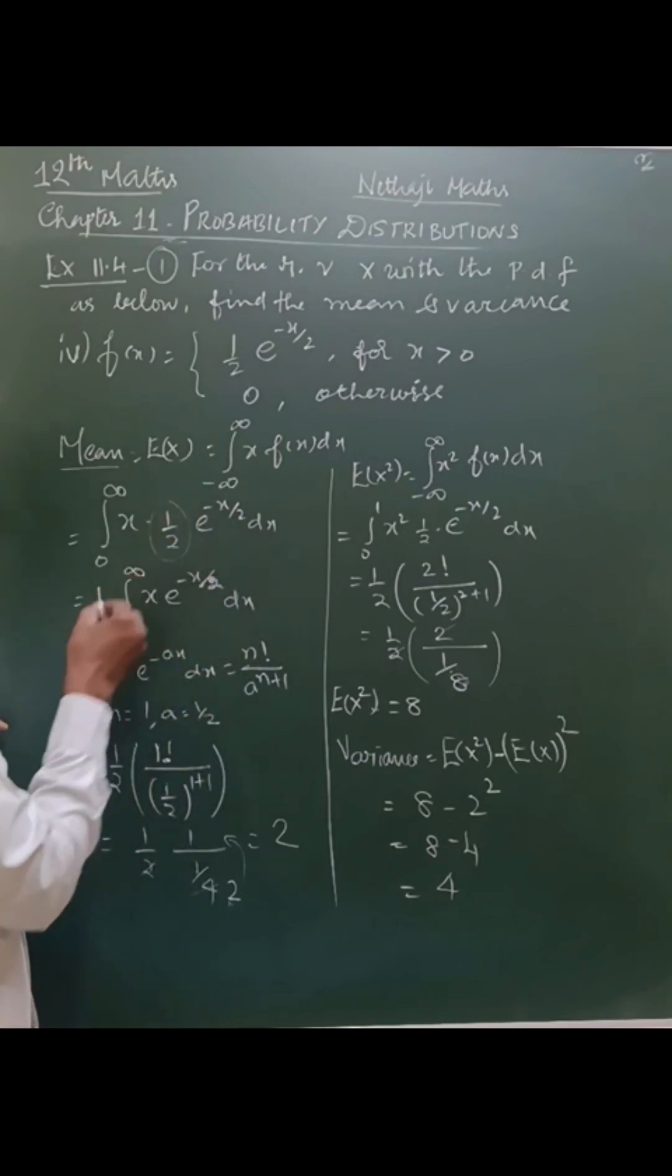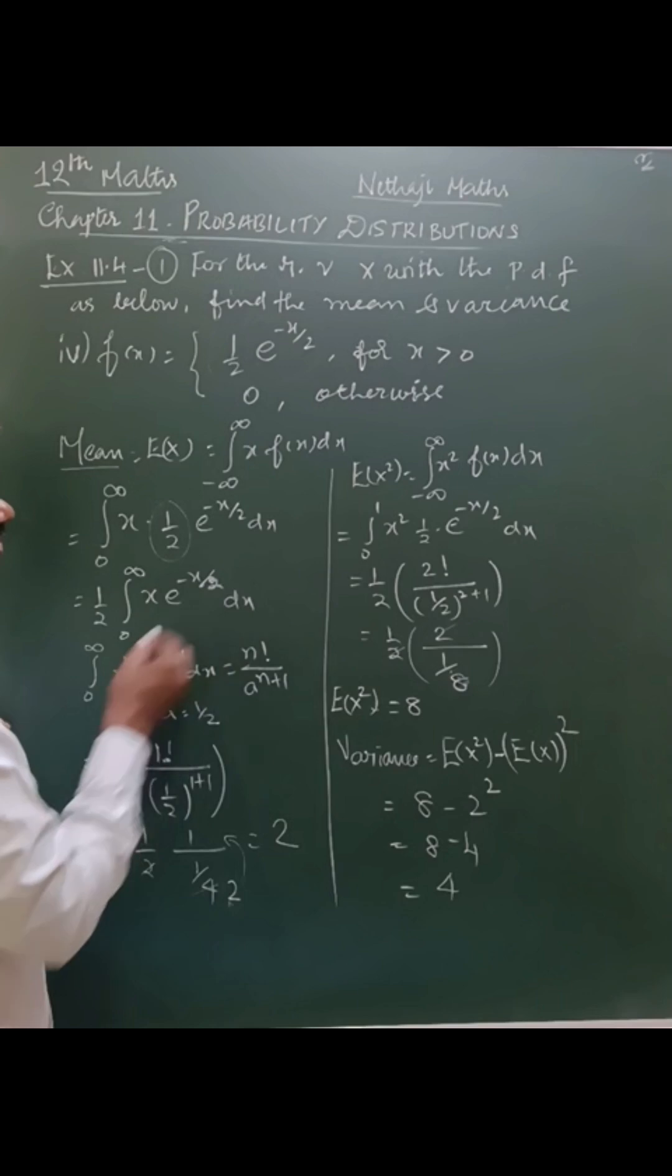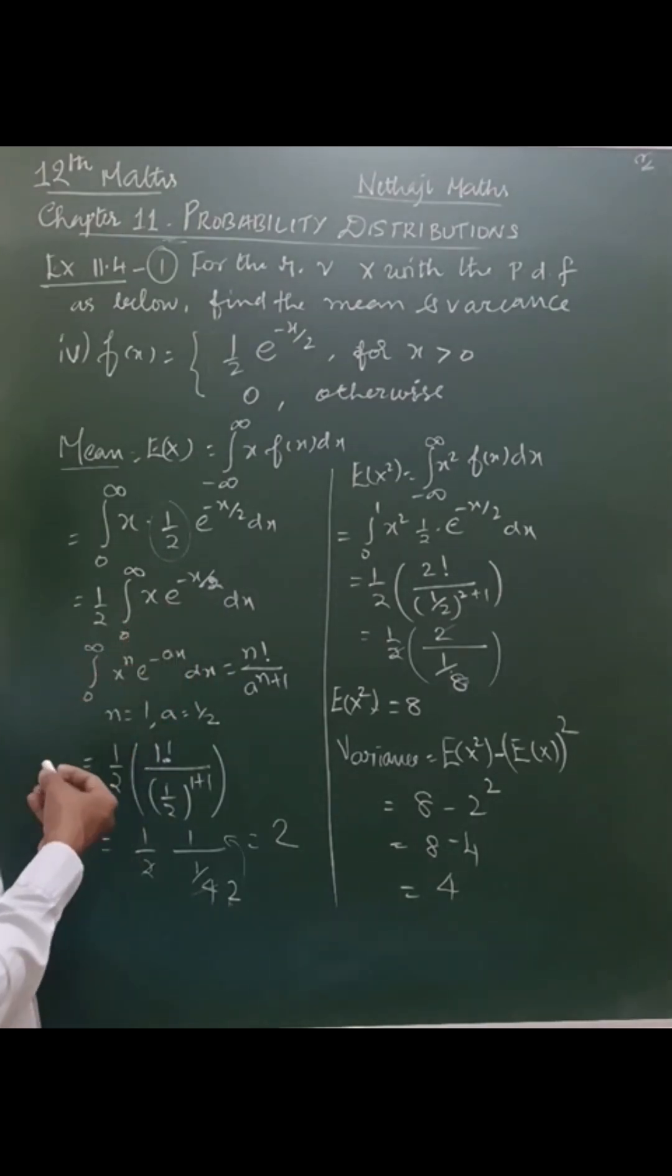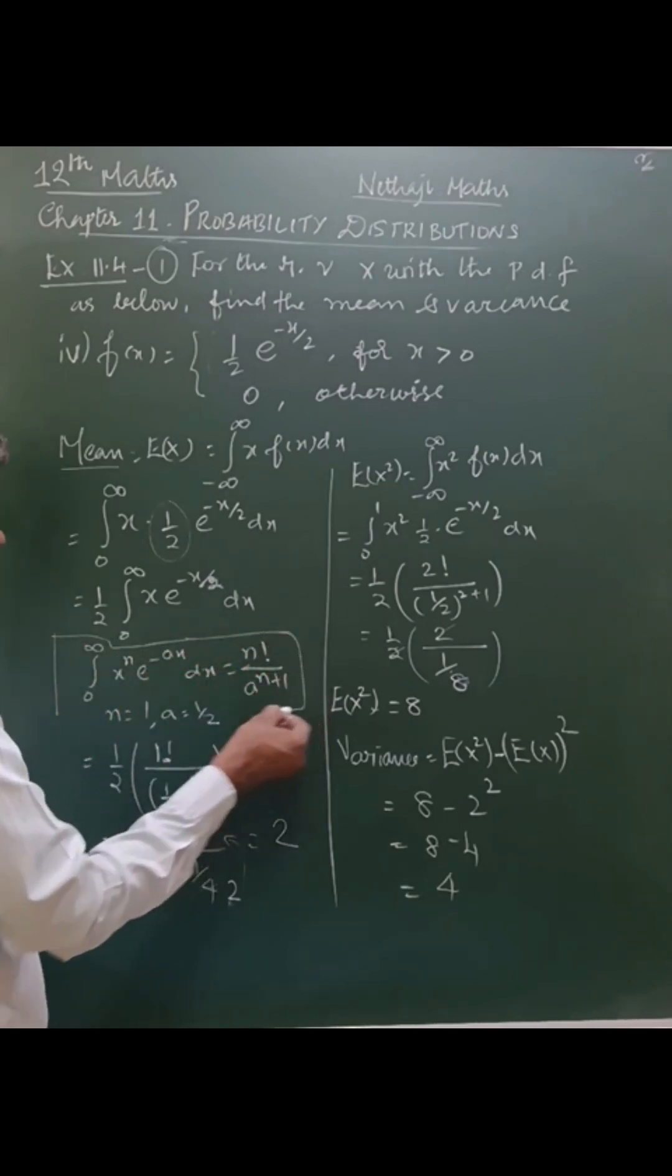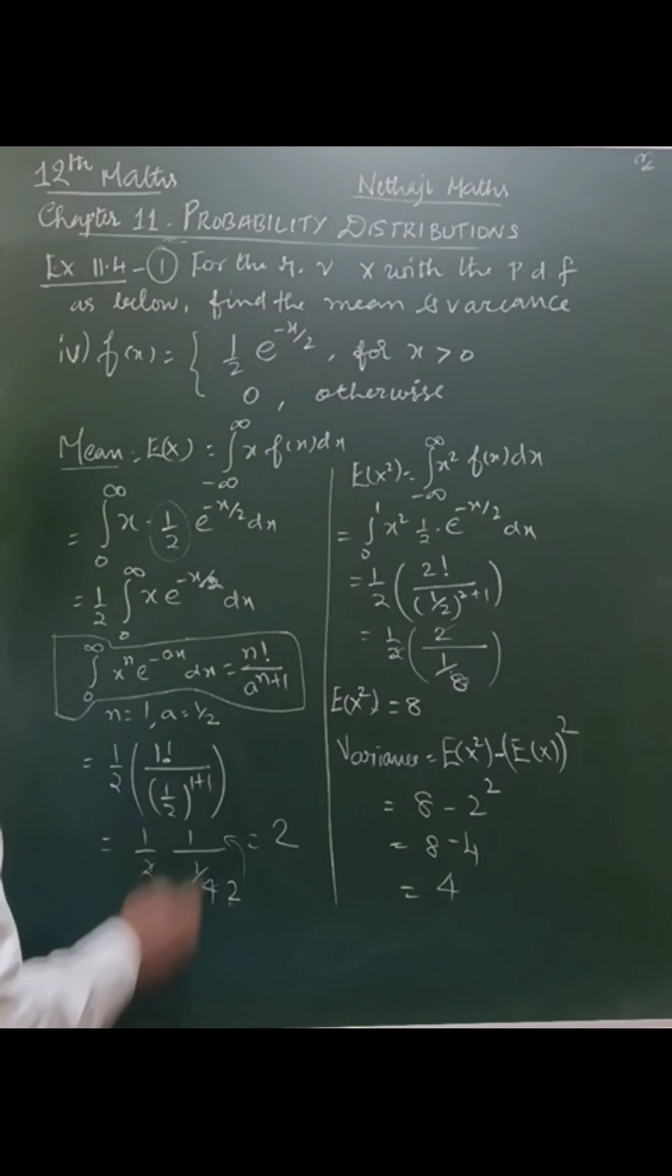One-half is constant, x into e power minus x by 2 into dx. The question is in the form of gamma integral formula. That is the gamma integral formula: integral 0 to infinity x power n e power minus ax into dx equals n factorial by a power n plus 1.